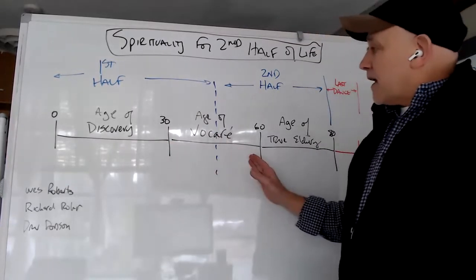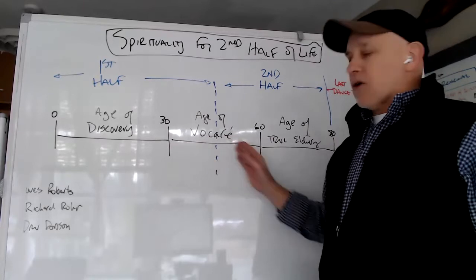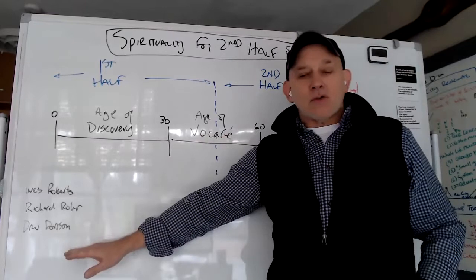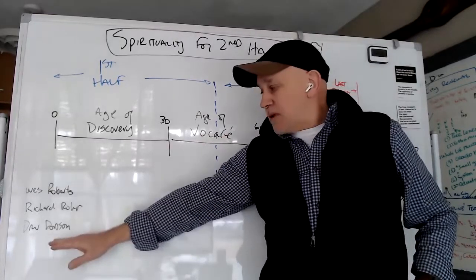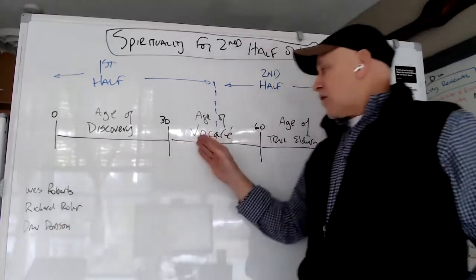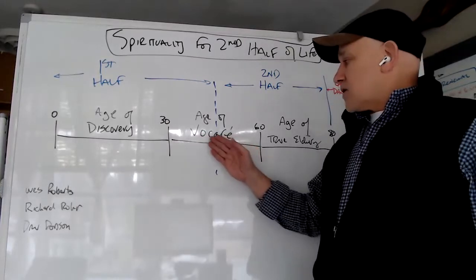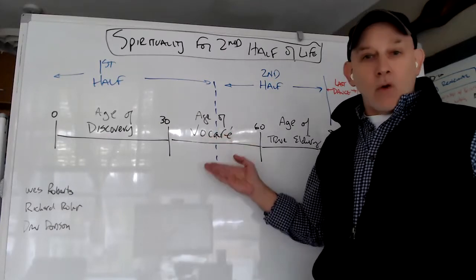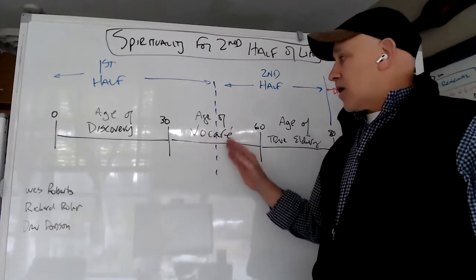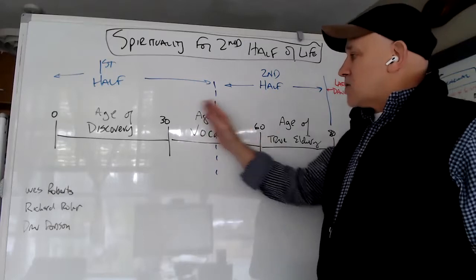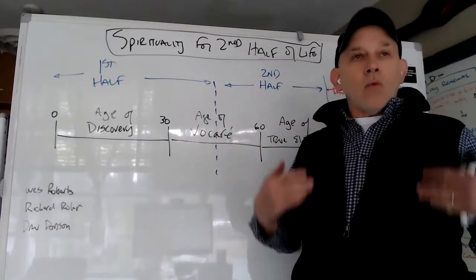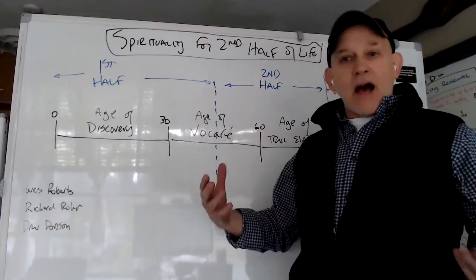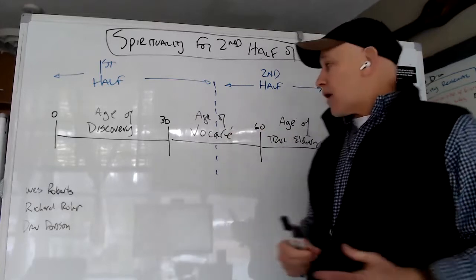And I think that I'm going to call that the age of discovery. Then from 30 to 60, I'm going to call it the age of vokare. And this word vokare is Latin, and I get it from my friend Drew Dotson, who started a business called vocari. Vocari means calling. So it's where we get our word vocation or our word vocal. So vocari is this age, this season where we are working and living out the stewardship of things that God's put into our life.